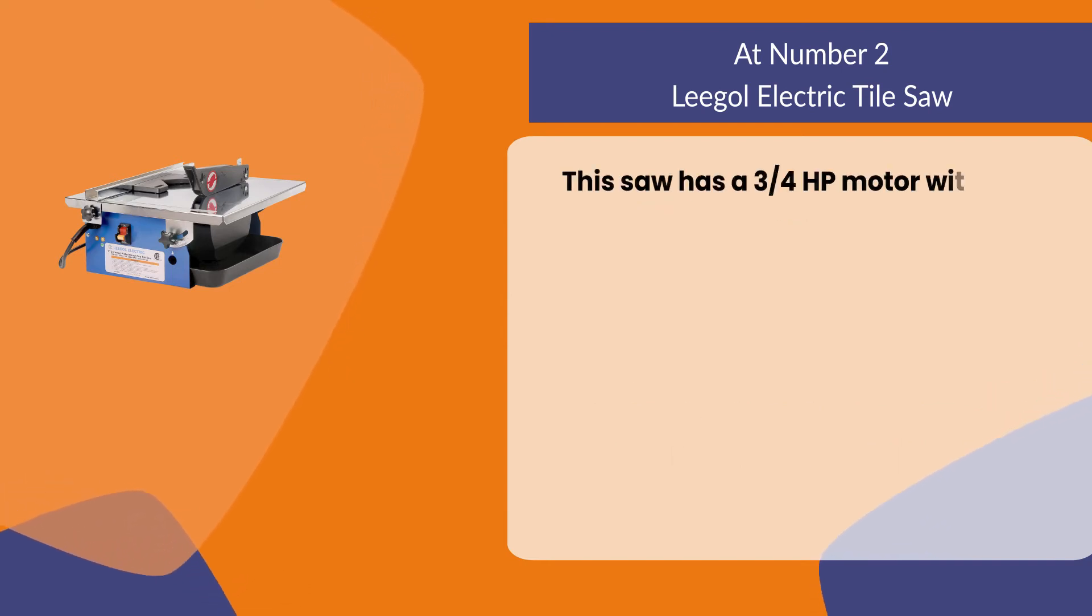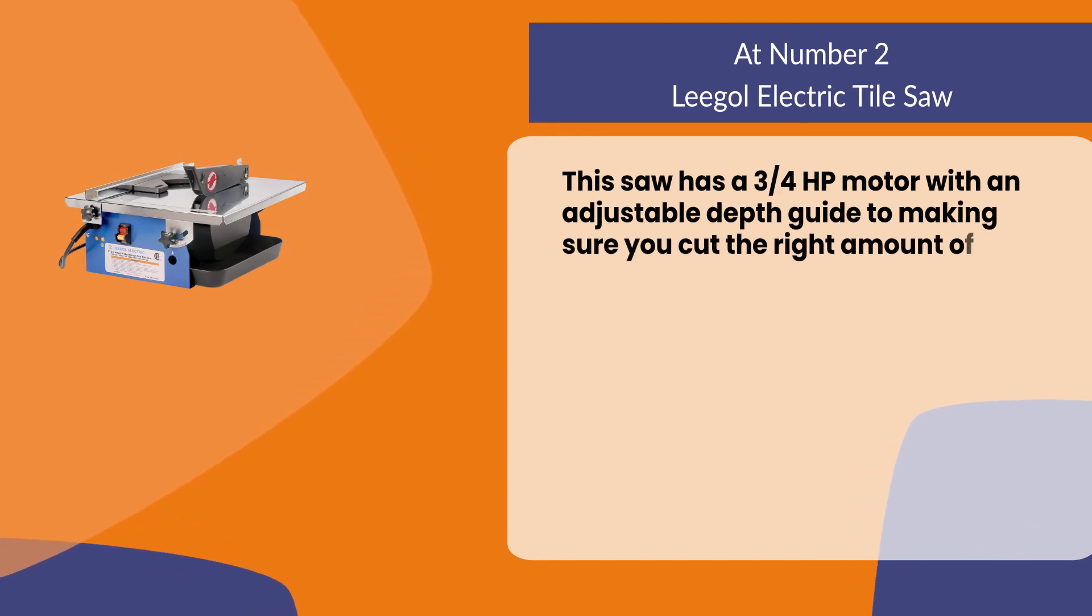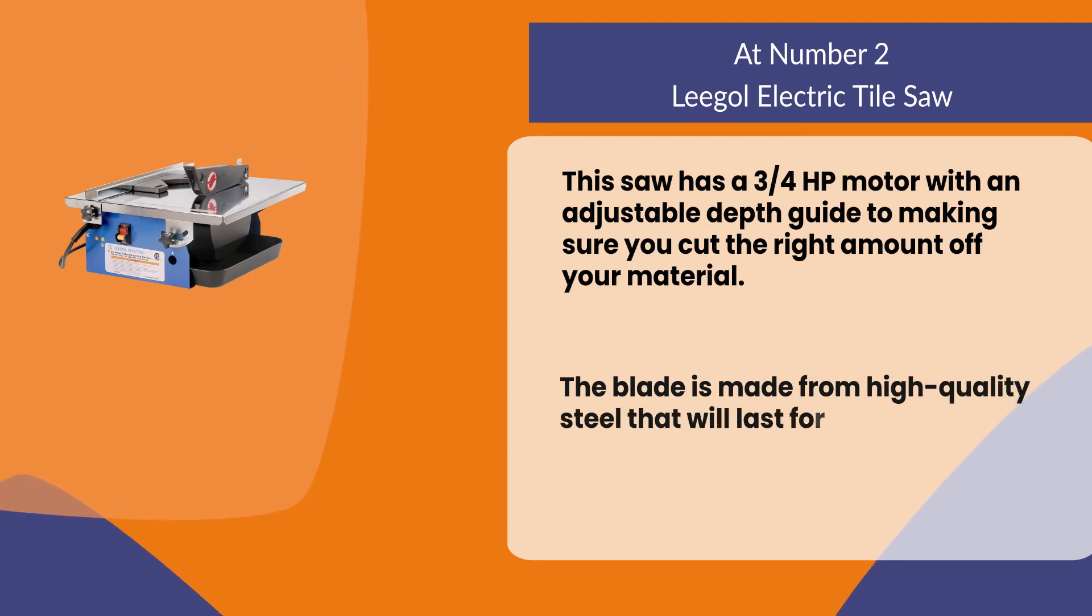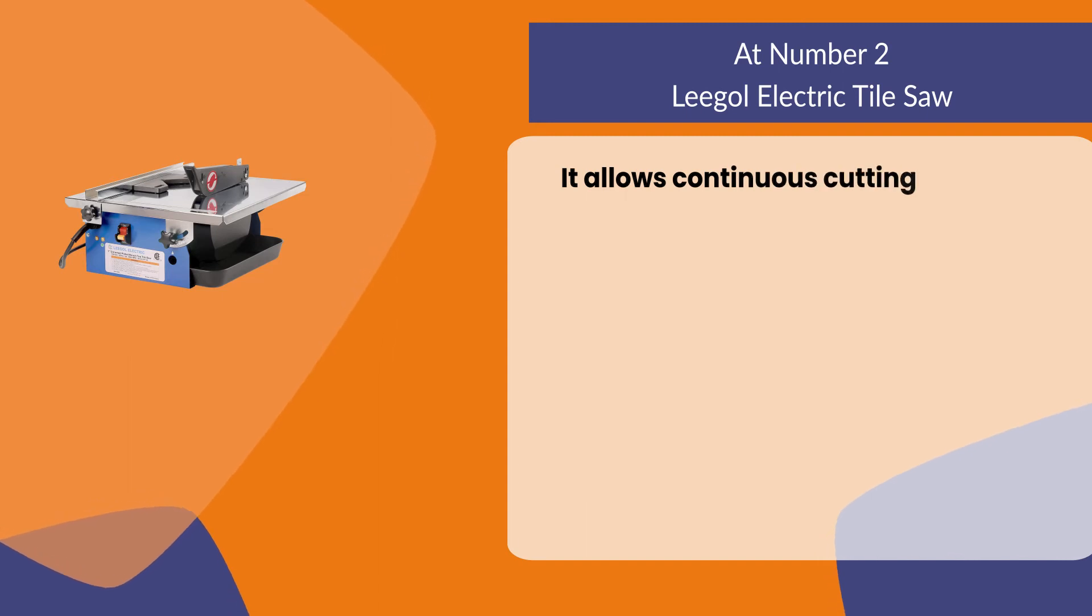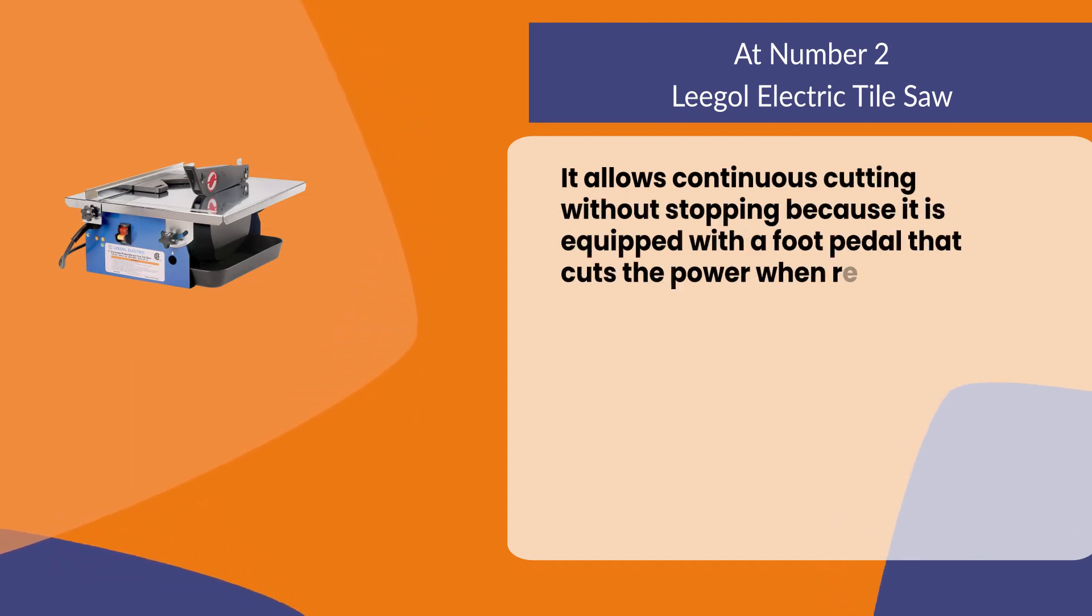This saw has a 3/4 HP motor with an adjustable depth guide to make sure you cut the right amount off your material. The blade is made from high-quality steel that will last for years of use. It allows continuous cutting without stopping because it is equipped with a foot pedal that cuts the power when released.